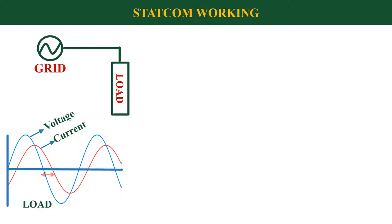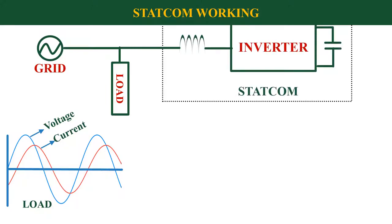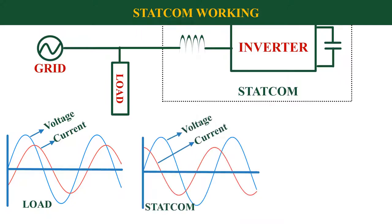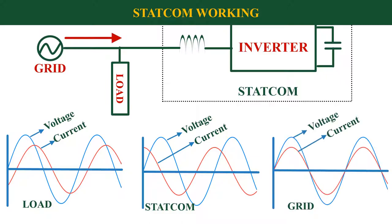Now we are connecting a Statcom at the same point where we connected the load. Assume that the Statcom is generating reactive power which is equal to the reactive power consumed by the load. But here the current leads the voltage by 90 degree. So when we inject reactive power to the grid, the net reactive power taken from the grid will become zero. So the grid power is now purely active in nature. This is how we control the reactive power in any network using Statcom.